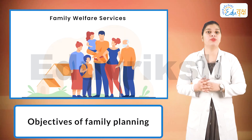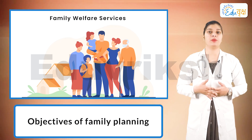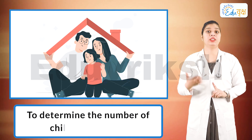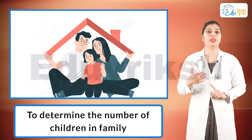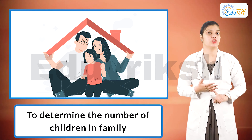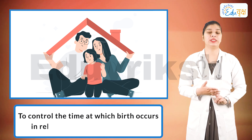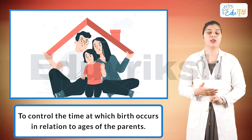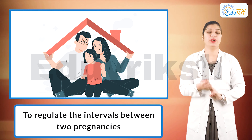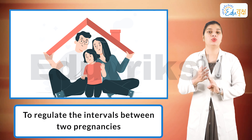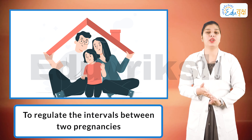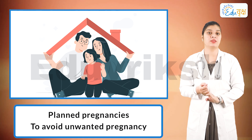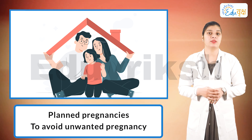The Objectives of Family Planning — what is necessary to tell the mother and father about family planning. Number 1: To determine the number of children in the family. Number 2: To control the time at which births occur in relation to the ages of the parents. Number 3: To regulate the intervals between pregnancies. Number 4: To bring about wanted births. Number 5: To avoid unwanted births.